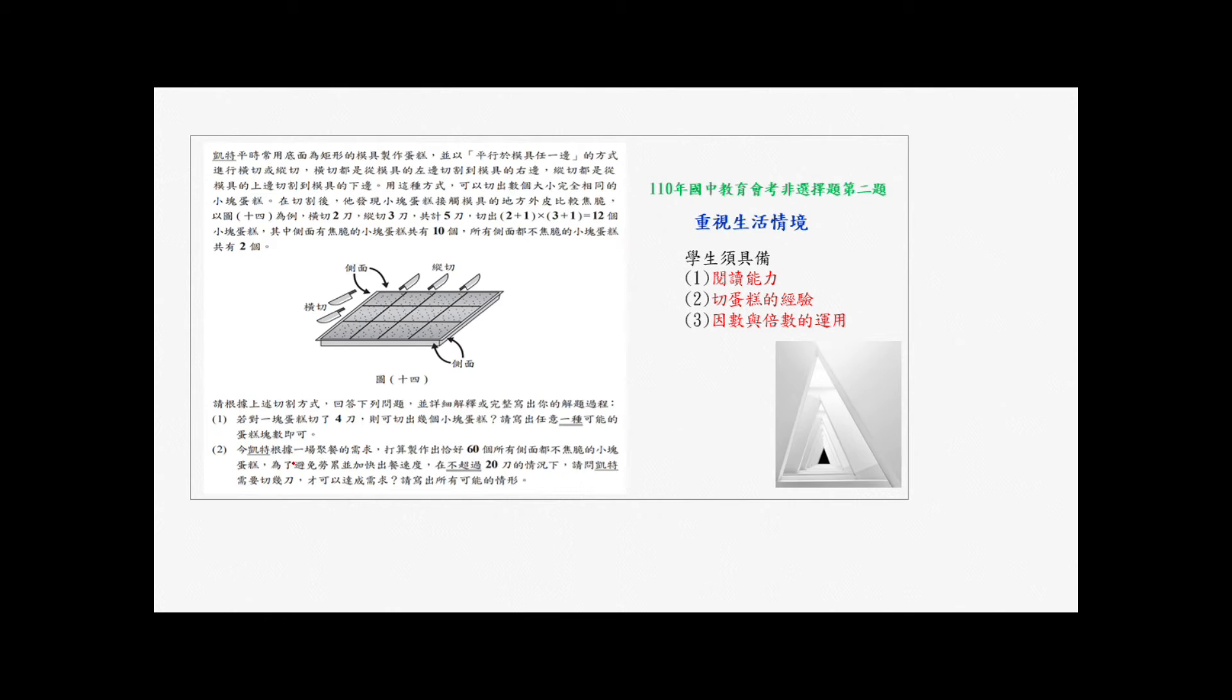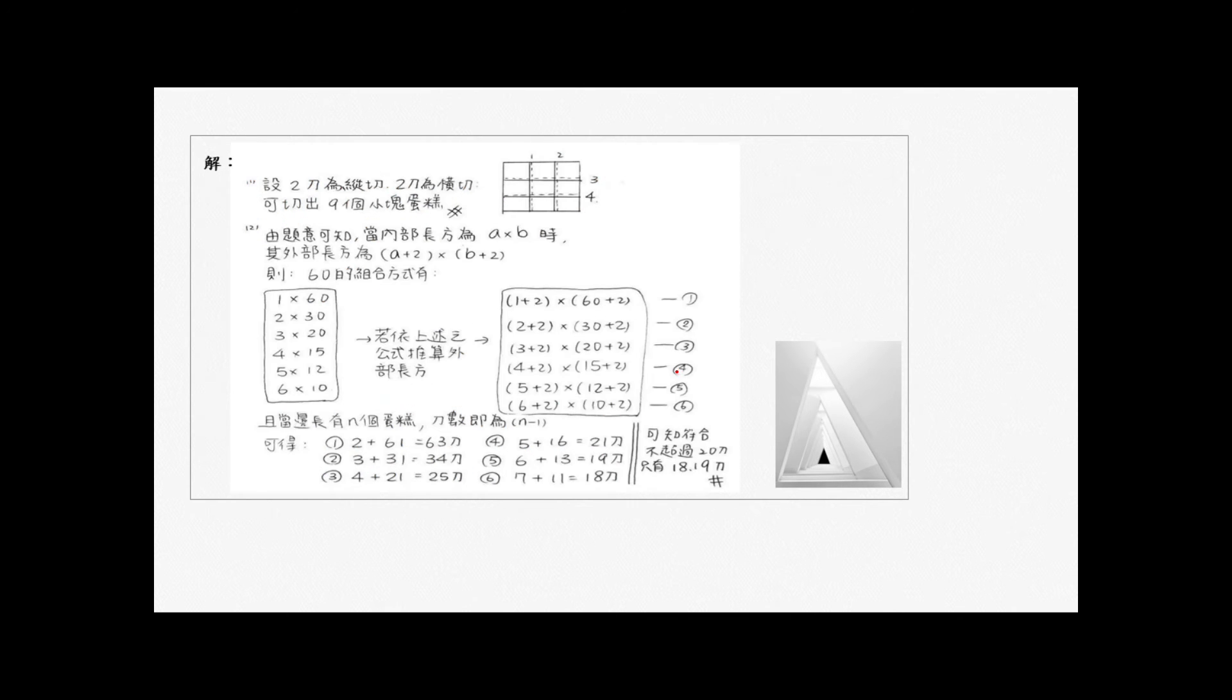请根据上述切割方式回答下列问题并详细解释或完整写出你的解题过程。第一个:如果对一块蛋糕切了四刀,则可以切出几块小块蛋糕?请写出任意种可能的蛋糕数就可以了。第二个:凯特根据一场聚餐的需求打算制作出60个所有侧面都不焦脆的小块蛋糕,为了避免劳累并加快出餐的速度,在不超过二十刀的情况下,写出所有可能的情形。这也是学生需具备第一个阅读能力,第二个切蛋糕经验,第三个因数倍数的应用。